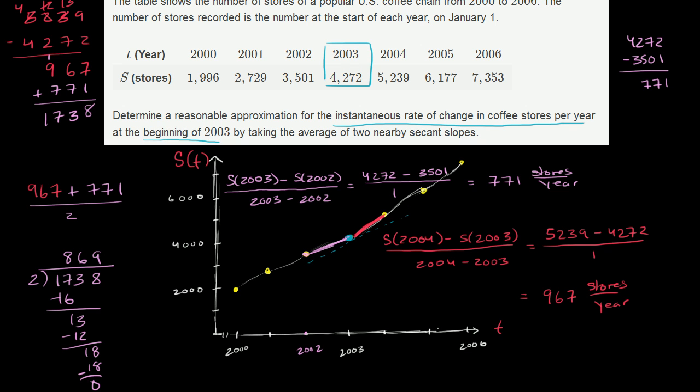So our approximation for the instantaneous rate of change, for the slope of our approximation, for the slope of the tangent line right over here, is 869 stores per year.